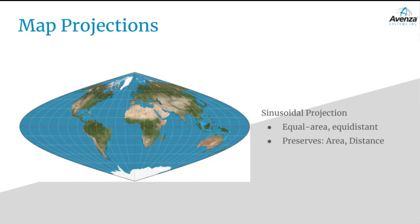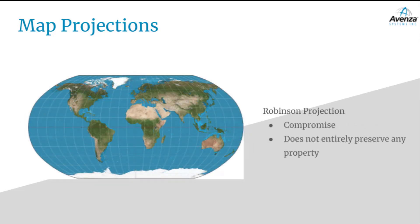Another example is the sinusoidal projection, which is both an equal area and equidistant projection. It preserves the area and distance of features, which results in the distortion of directions and shapes. The Robinson projection is a great example of a compromise projection. While it does not entirely preserve any one of the map properties, it instead includes a reasonable amount of distortion of each property to reach a compromise between all four.